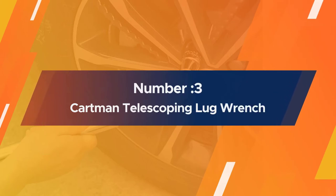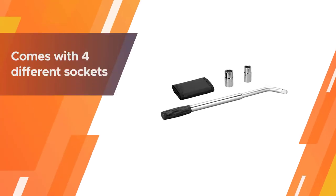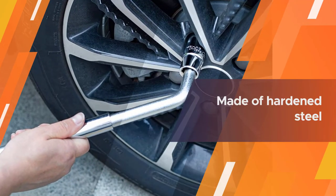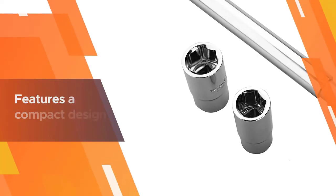Number three: Kartman Telescoping Lug Wrench. This tool comes with four different sockets ranging from 17mm to 22mm, allowing users to fix the wheels of most cars. Each socket, made of hardened steel, is labeled with its respective size for easier identifying.